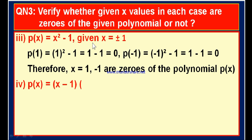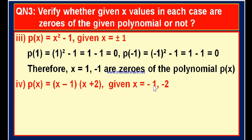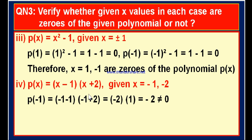Now fourth bit: P of x is equal to x minus 1 into x plus 2, and given x is equal to minus 1 and x is equal to minus 2. We have to verify whether the polynomial is 0 for these two values of x. Let us substitute x is equal to minus 1 first. P of minus 1 is equal to minus 1 minus 1 into minus 1 plus 2. What is minus 1 minus 1? That is minus 2; and minus 1 plus 2 is plus 1. Minus 2 into 1 is minus 2, which is not equal to 0. Therefore, minus 1 is not a zero of the polynomial.